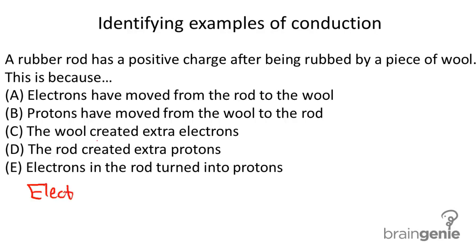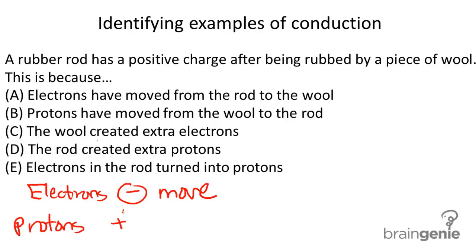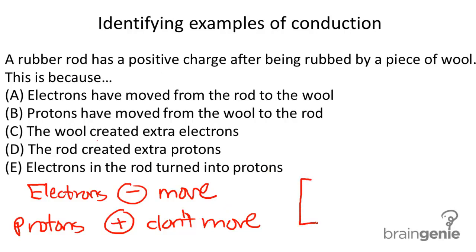Electrons are negative, and they can move. Protons are positive and don't move. Now, the rubber rod has a positive charge, so therefore electrons must have left the rubber rod.